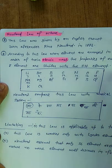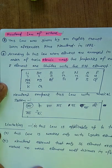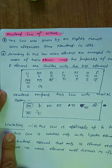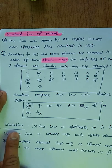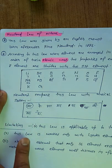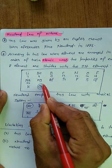To bahut acha justification tha, bahut easy justification tha jo ki Newland ne clear kiya. But is law ki bhi bahut saari ek major limitation rahi. Ab hum padhenge what are the limitations of the Newland law of the octave. To first limitation thi ki Newland law is applicable only up to the calcium element.